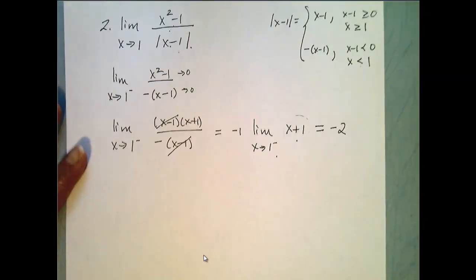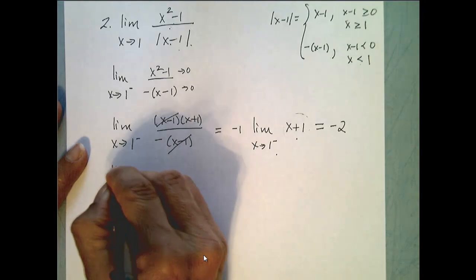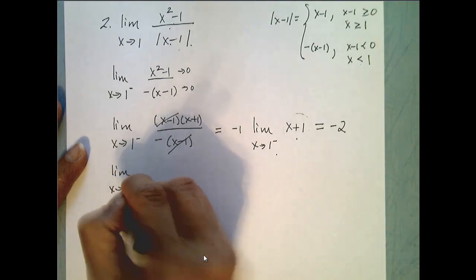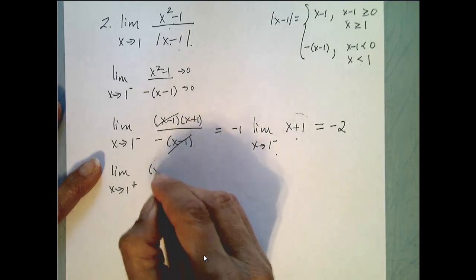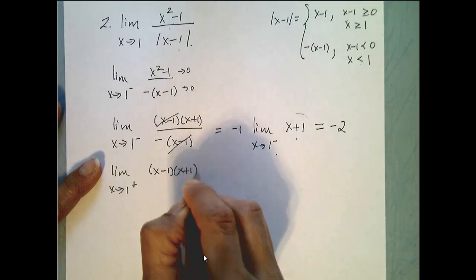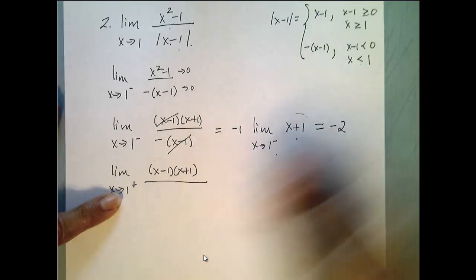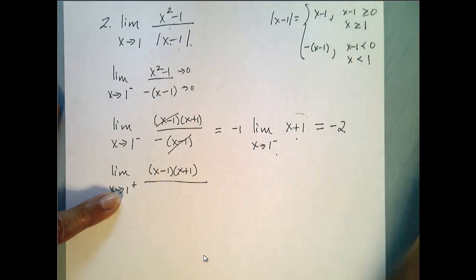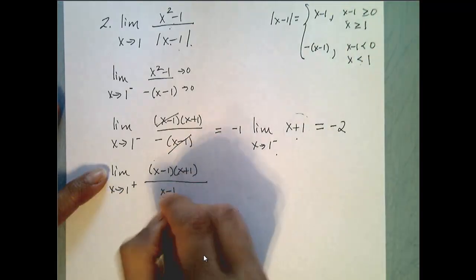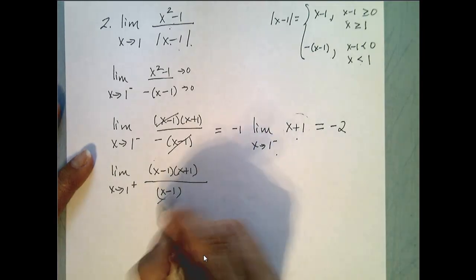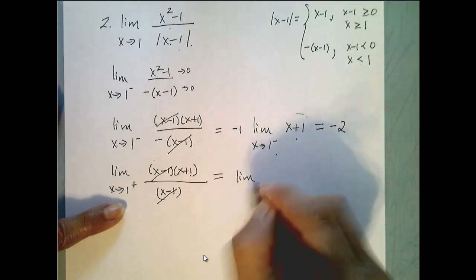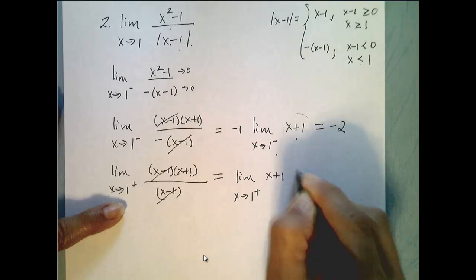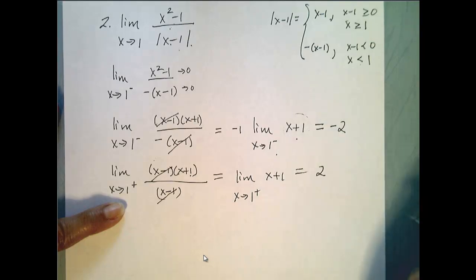Now let's look at the limit of this function as x approaches 1 from the right. The top is x squared minus 1, which factors to x minus 1 times x plus 1. To the right of 1 the function is defined as x minus 1, so I can cancel those factors and do direct substitution. This gives the limit as x goes to 1 from the right of x plus 1, which equals 2.